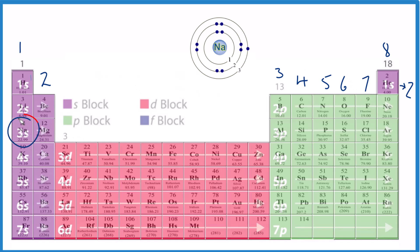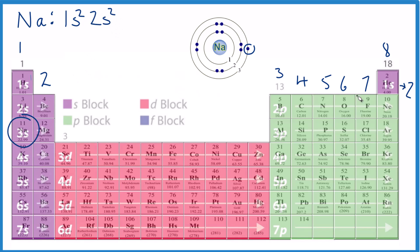Sodium right here — it's in group 1, so it should have one valence electron, and it does. So if we write the electron configuration for sodium, we would go 1s1, 1s2 — and that's full. So that first energy level has 1s2 in it. Then we go to 2s1, 2s2, and we're still in the second energy level because this is the second period.